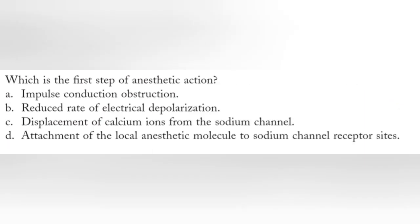Fourth question: which is the first step of anesthetic action? Option A, impulse conductor obstruction. Option B, reduced rate of electrical depolarization. Option C, displacement of calcium ions from the sodium channel. Option D, attachment of the local anesthetic molecule to sodium channel receptor sites.